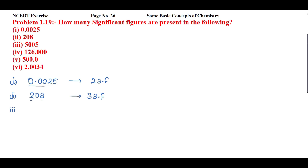Next one is 5005. Two rules apply here. First, all non-zero numbers are significant. The zeros between two non-zero digits — between two significant figures — are always significant. That means there are 1, 2, 3, 4 — four significant figures.